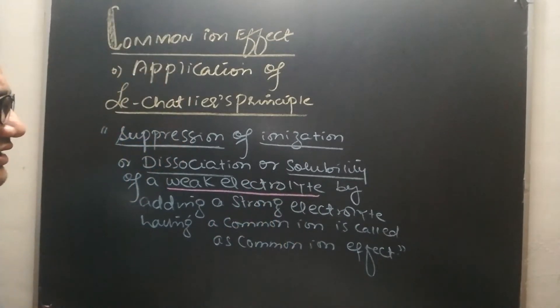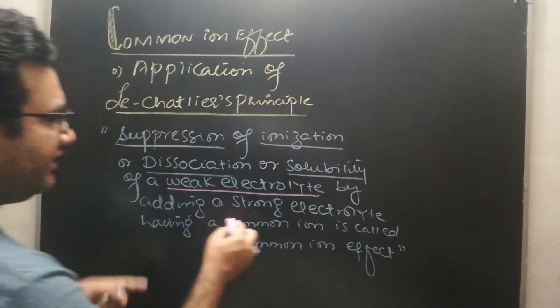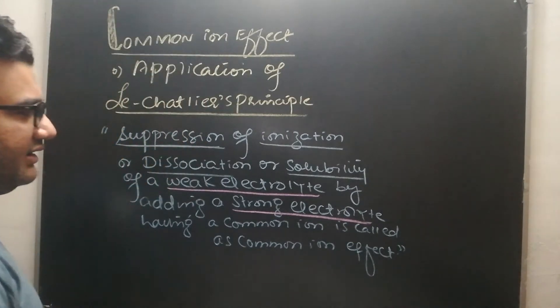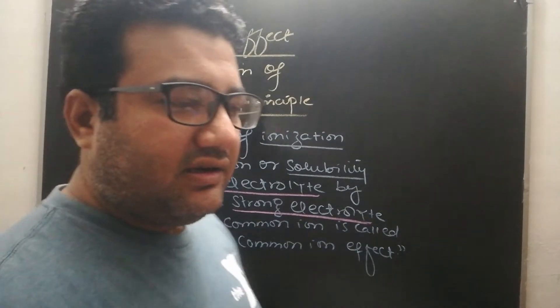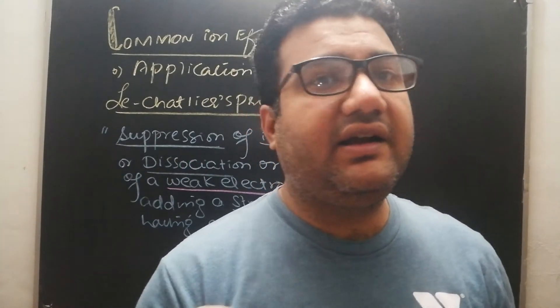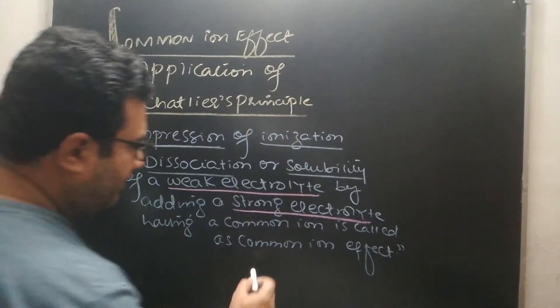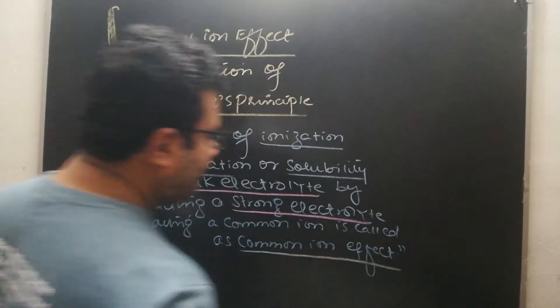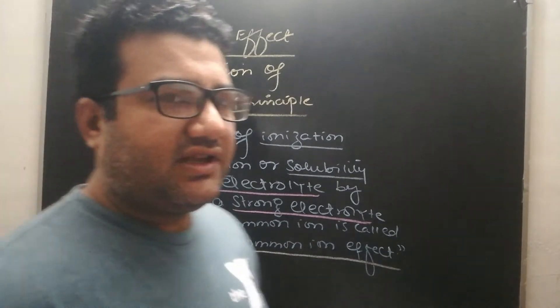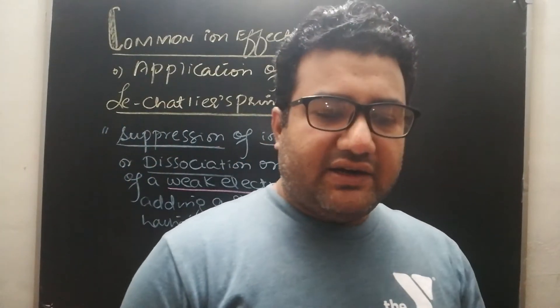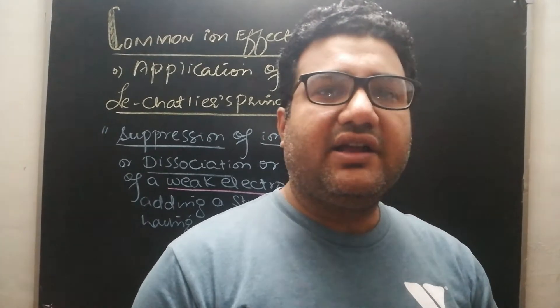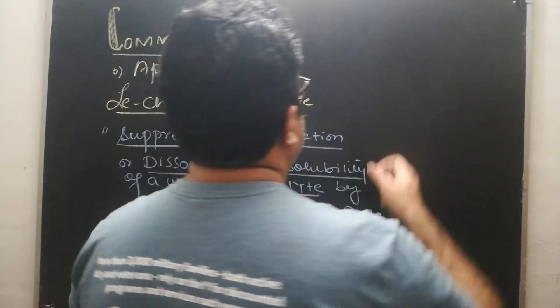This suppression takes place because we have added a strong electrolyte. However, adding a strong electrolyte to a weak electrolyte will not decrease its ionization unless there is one ion common between them. There must be a common ion. Common ion effect affects the solubility or ionization of weak electrolytes only — it does not affect the strong electrolyte.